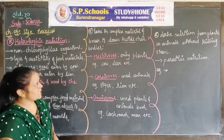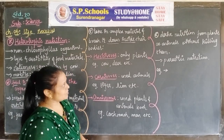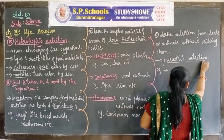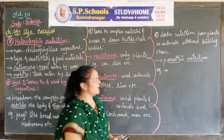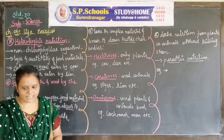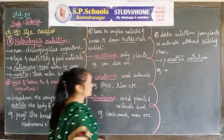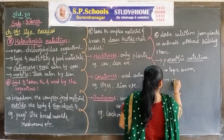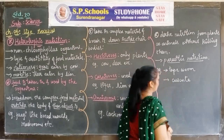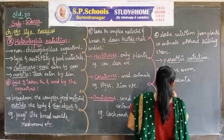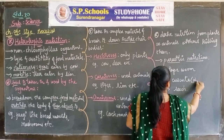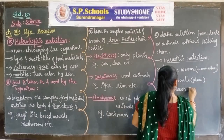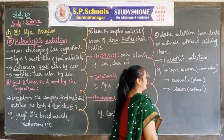Some organisms derive nutrition from plants or animals without killing them — this is called parasitic nutrition. You already studied parasitic nutrition in lower standards. Examples of parasitic nutrition include Cuscuta, tapeworm, and leech. Cuscuta is a plant parasite; tapeworm and leech are animal parasites. So this is parasitic nutrition.